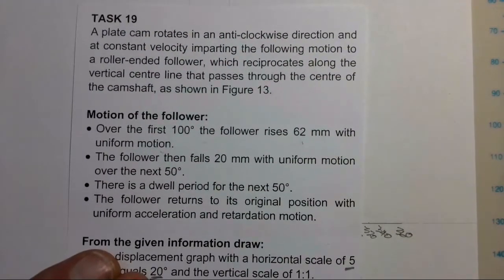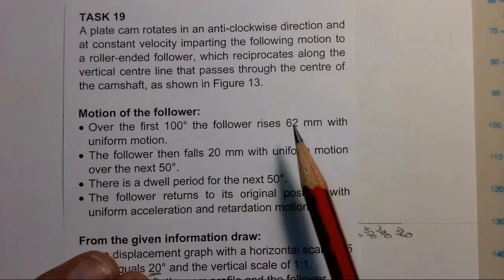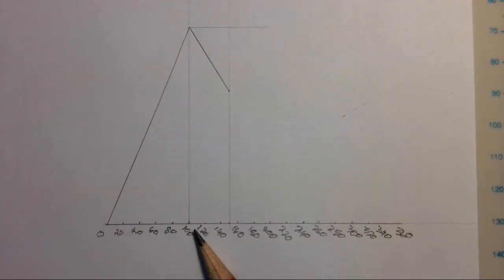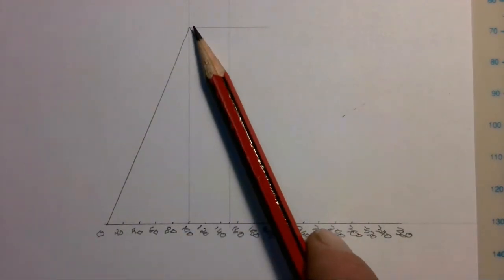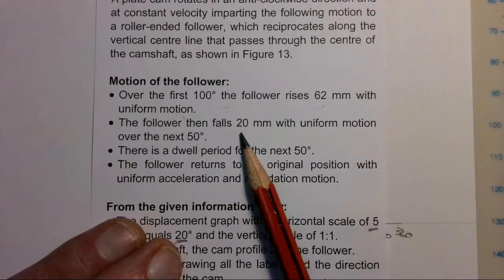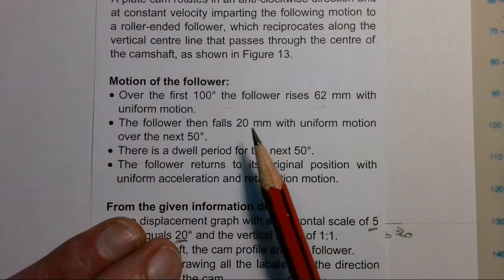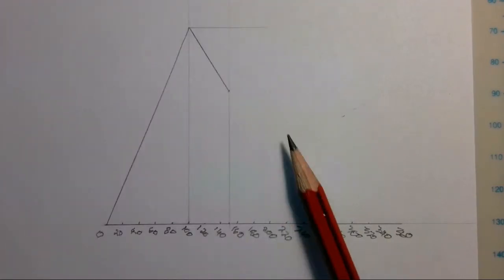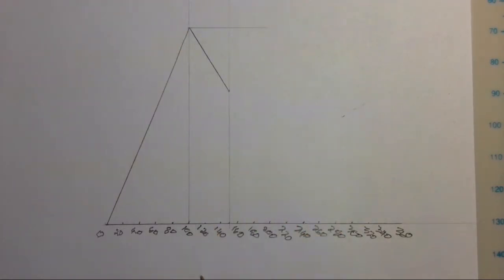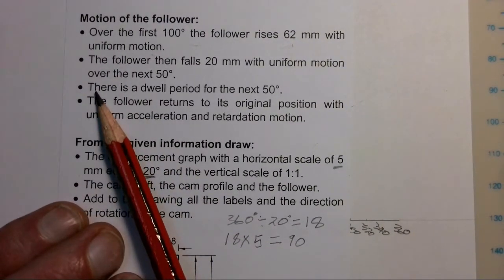That covers bullet points one and two: over the first 100 degrees the follower went up 62 millimeters, then fell 20 millimeters over the next 50 degrees. Moving to the next bullet point...